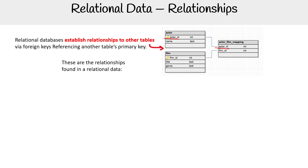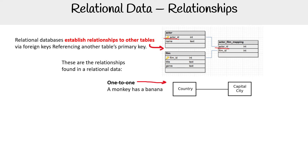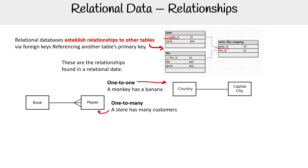There are four types of relationships between relational databases and their tables. The first is one-to-one. Imagine a monkey has a banana, or here we have a table called country and it has a capital — it's one-to-one. Then you have one-to-many: a store has many customers, or a book has many pages. Notice that this denotes the many here.